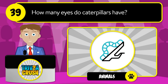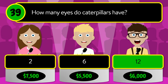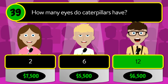Question number thirty-nine: how many eyes do caterpillars have? Is it two, six, or twelve? The correct answer is twelve.